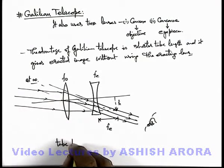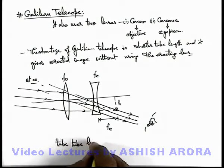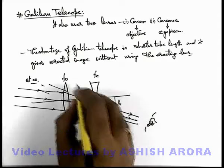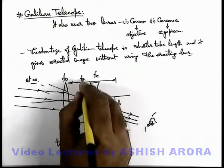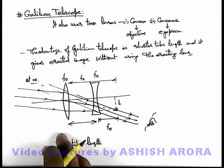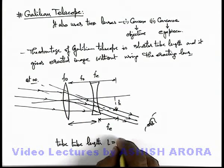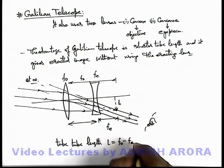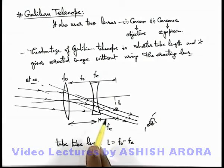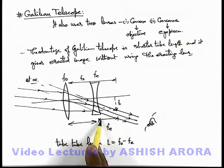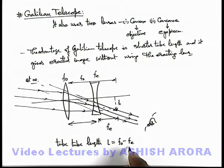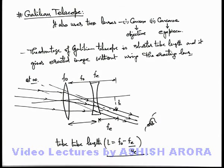In the relaxed state of the eye, for final image production, the tube length is given as the separation between the 2 lenses. Since this image is produced at a distance f-o from the lens, the tube length L can be written as f-o minus f-e. If the final image is to be produced at the near point of the eye, this distance instead of f-e we can use as u-e and corresponding calculations can be done.